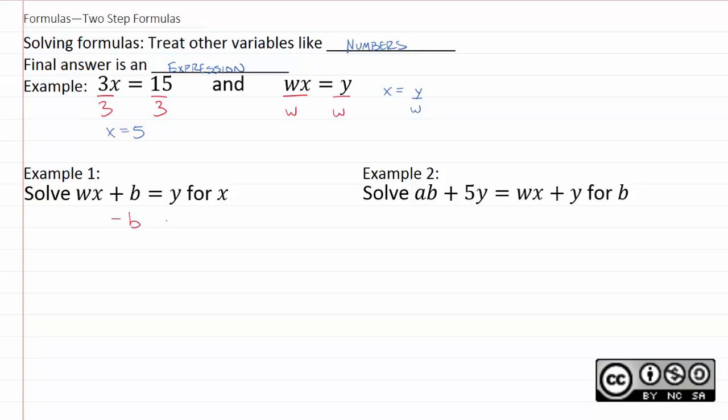I'll begin with b. We'll subtract b from both sides. Now y and b are not like terms. You could write it as negative b plus y. It's probably a little easier though to write it as y minus b.